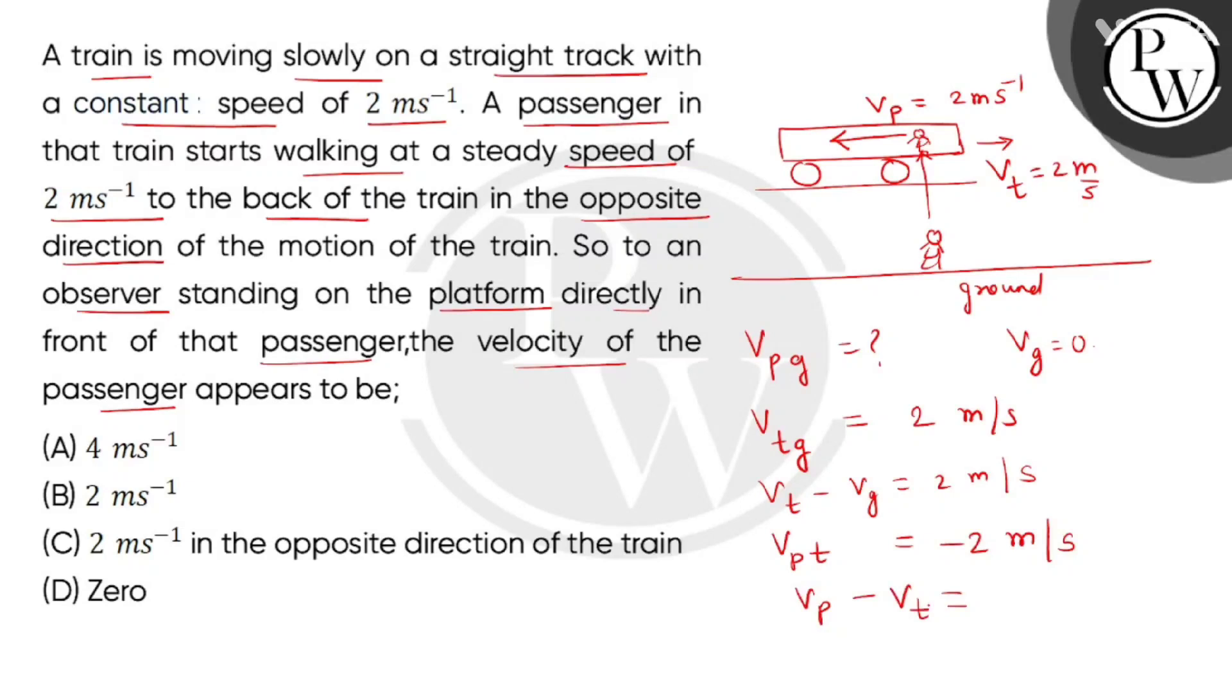Now we have equation 1 and equation 2. If we add both equations, what will we get? Vp minus Vg, and right side will be 0. So velocity of passenger with respect to ground is 0. Means we can feel it in the rest, because we need to find the same thing.